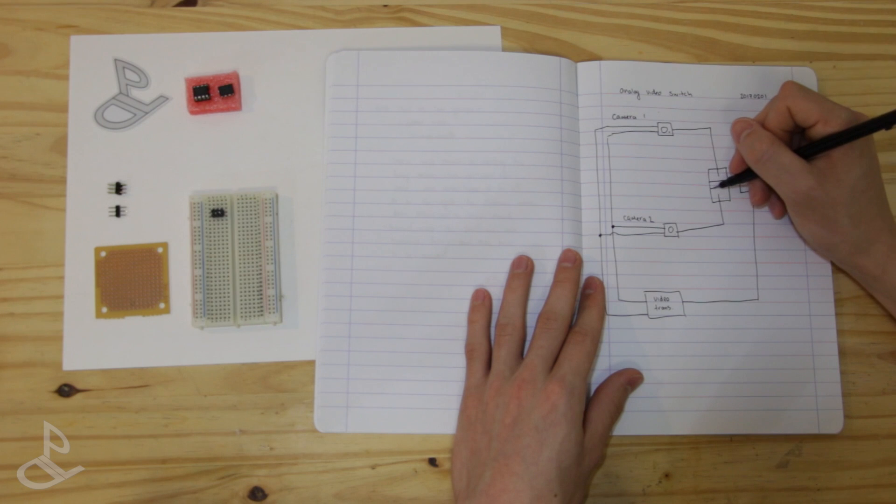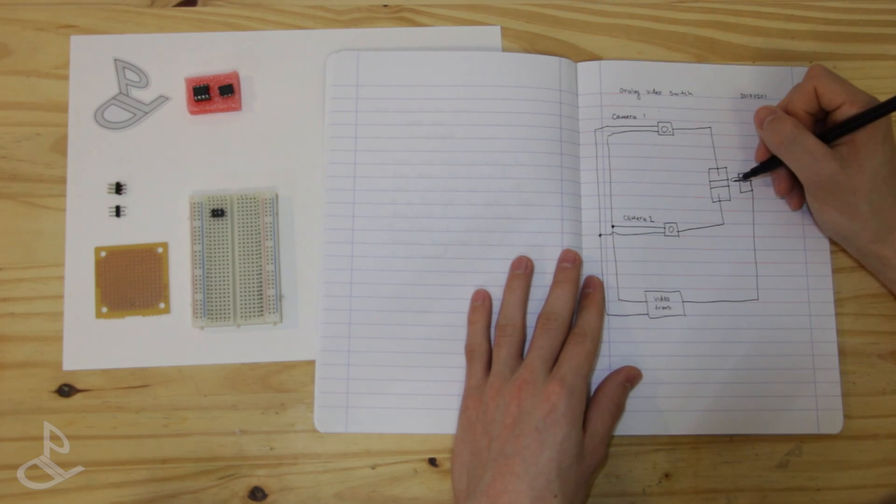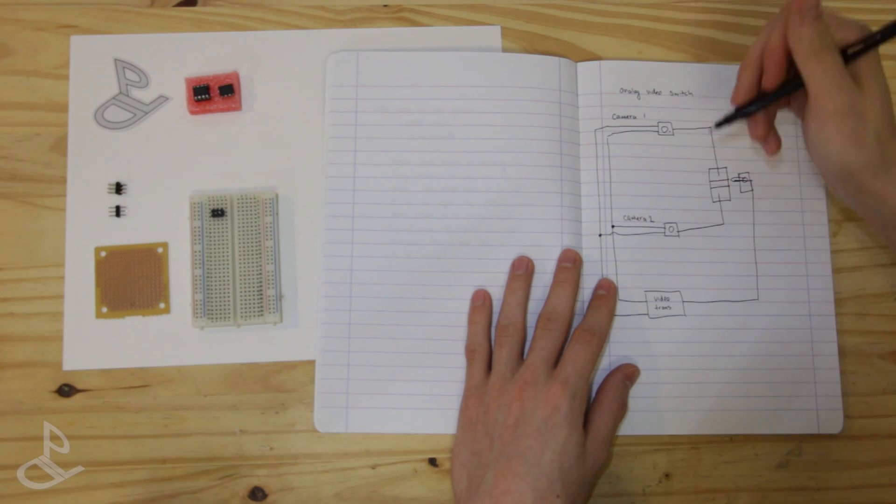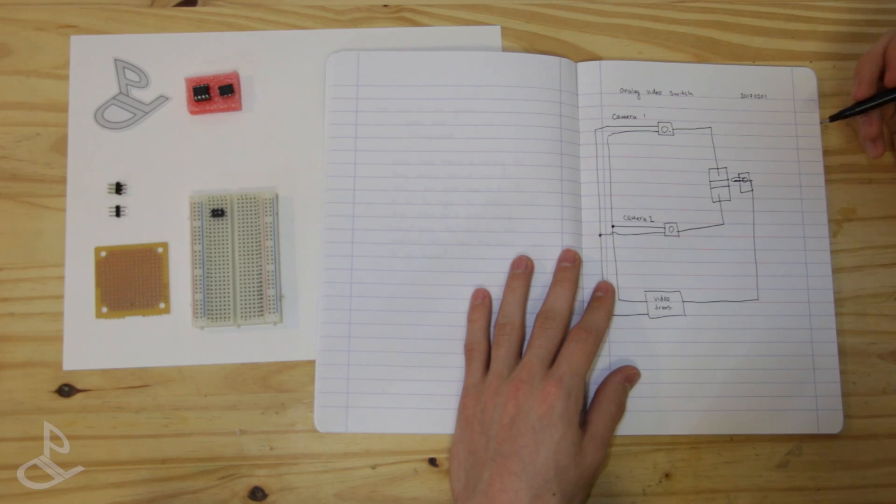And they are going to have a copper plate on top of them. And then the servo is going to switch between these two contacts. And that is what will ultimately choose which video signal is going to the video transmitter.